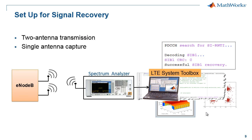Let me briefly describe the setup used in this signal recovery. We performed the capture of a dual-antenna eNodeB signal at 15.36 mega samples per second, which is sufficient to correctly sample all valid eNodeB bandwidths up to 10 megahertz. The output of the instruments is fed to MATLAB. In this particular demonstration, we have stored the IQ output as a file on disk, which we read into MATLAB to start the simulation.